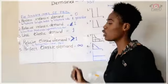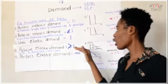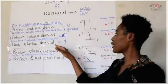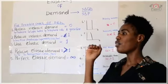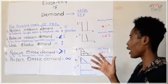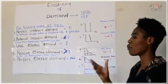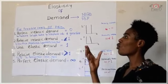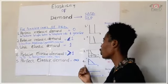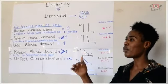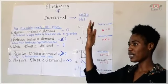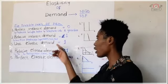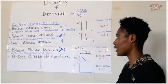For unitary elastic demand, we are saying that the percentage change in price is equal to the percentage change in demand. So if the price goes up by 20%, there will be a 20% fall in the quantity demanded.